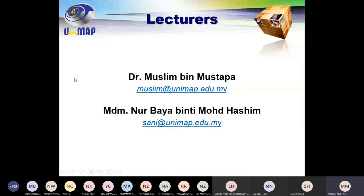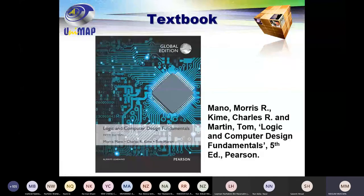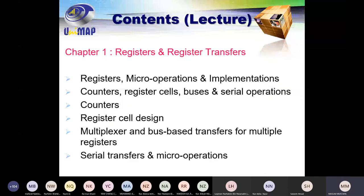This is the textbook we're going to use throughout the semester. We have a soft copy, so you don't need to buy it — we'll really only use one chapter. These are the topics we're going to discuss throughout the course: Chapter One covers registers and register transfer. I'll update most of the slides from previous semesters to suit current needs.